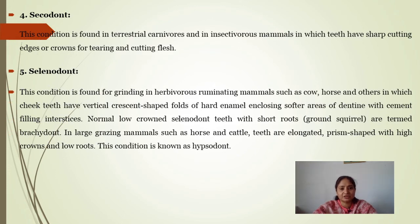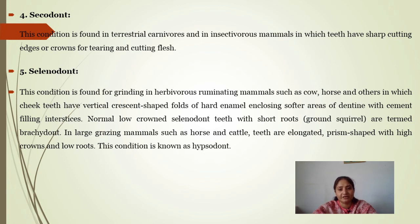Echodont (zalambdodont/dilambdodont): found in terrestrial carnivores and insectivore mammals, used for tearing and cutting flesh. Selenodont: found in grinding herbivore ruminant mammals such as cow and horse, in which the cheek teeth have vertical crescent-shaped folds of hard enamel enclosing soft areas of dentine with cement filling. Normal low-crowned selenodont teeth with short roots are termed brachydont.